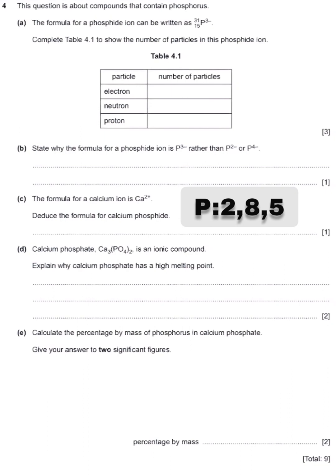For phosphorus to become stable, it needs to gain three electrons. Since we are talking about the phosphide ion, for it to become an ion it has gained three electrons. Initially it had 15 electrons; since it has gained three electrons, the number of electrons becomes 18 altogether. The proton number does not change because during bonding, only electrons are involved.